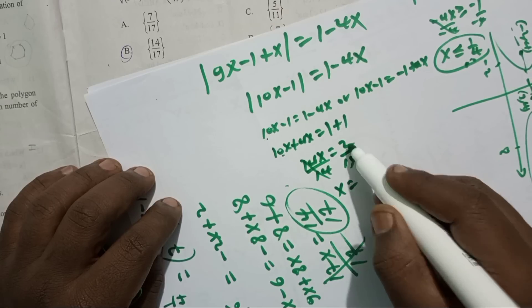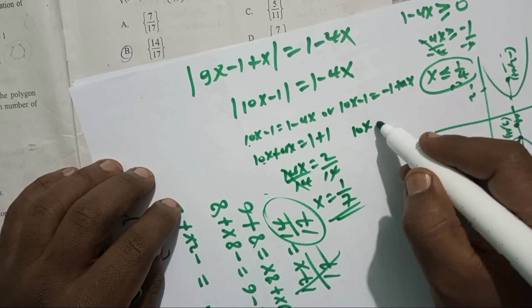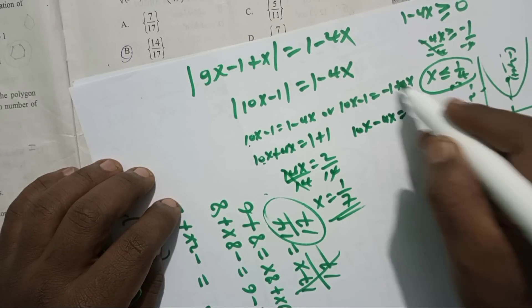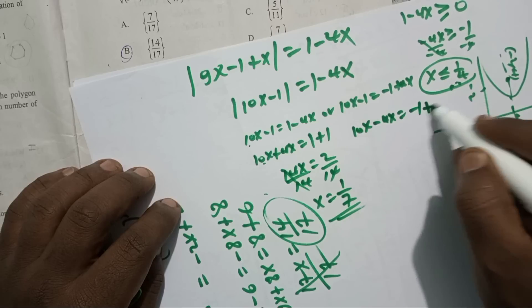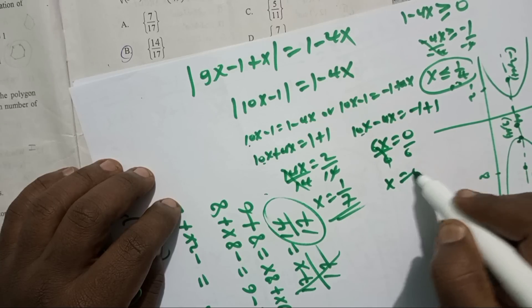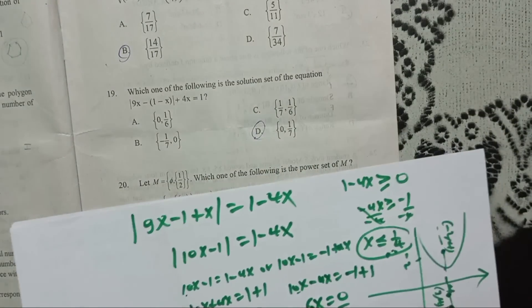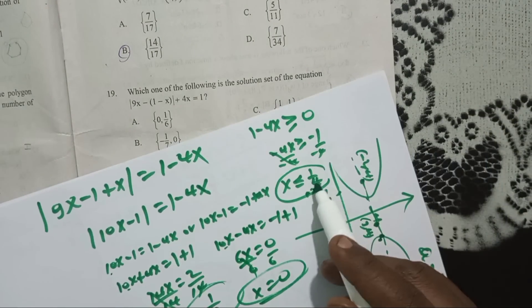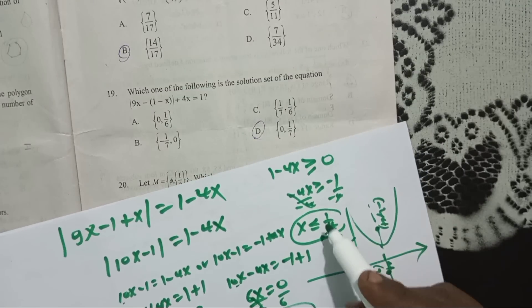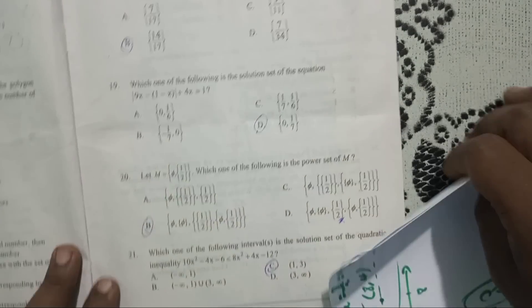This gives us: minus 4x equals minus 4x, and the other case gives minus 1 plus 6x equals minus 1 plus 4x, then minus 1 plus 6x equals minus 1. Solving these gives x equals 0 and x equals 1, which we verify against the condition x less than or equal to 1 over 4.